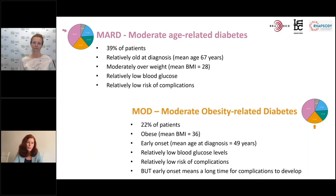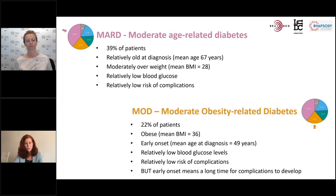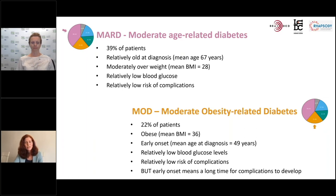On the other side of the spectrum, we have obese patients who are relatively young at diabetes onset, who also have low glucose levels and a relatively low risk of complications. However, we must remember that if you get diabetes early, you're going to live with it for a long time, so there will be a long time for complications to develop, and we have only been able to study the first years.